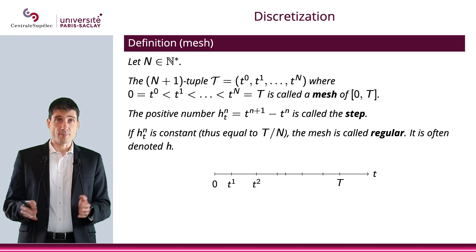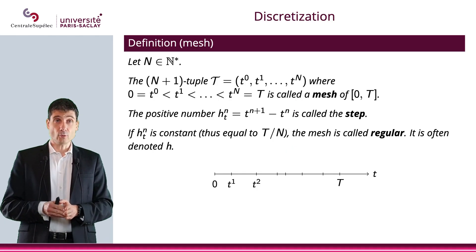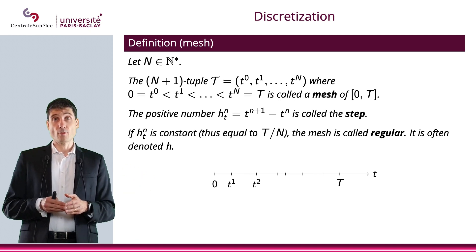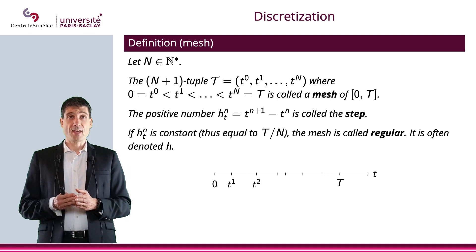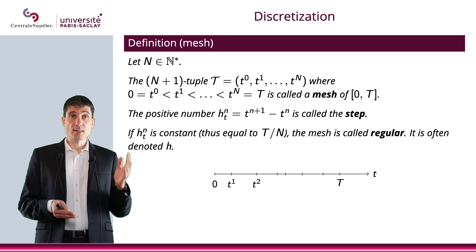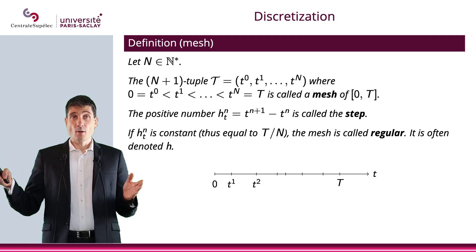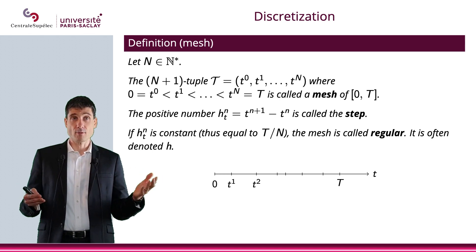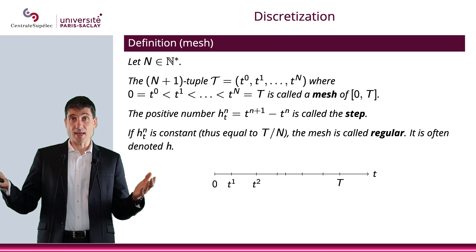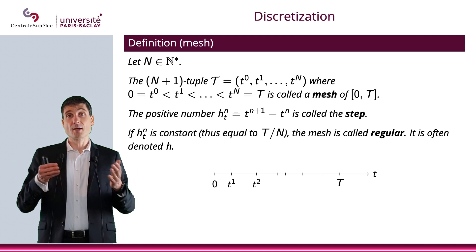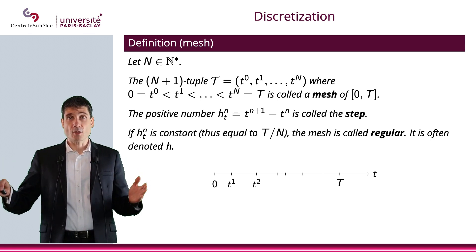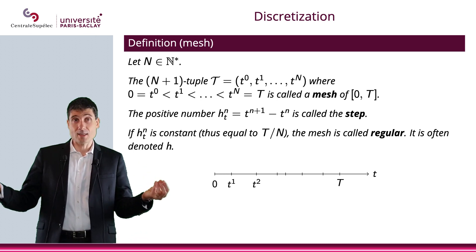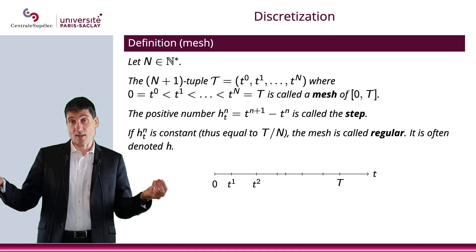Let's define what is a mesh. Consider an interval [0, T], and let n be a non-zero integer. Then the (n+1)-tuple (T^0,...,T^n) will be a mesh of [0, T] if we have T^0 equals zero, T^n equals T, and T^{i+1} greater than T^i. So it's really a subdivision of [0, T], where T^0 is zero and T^n is capital T.